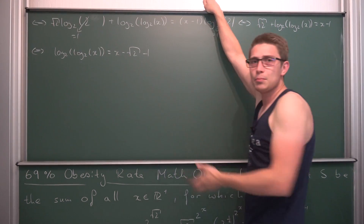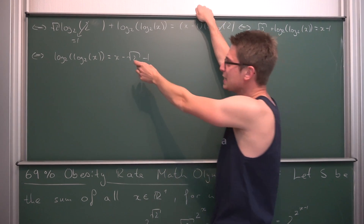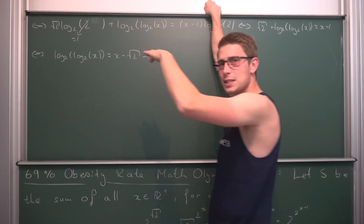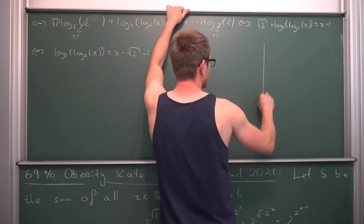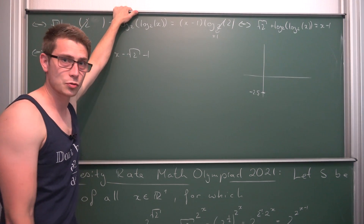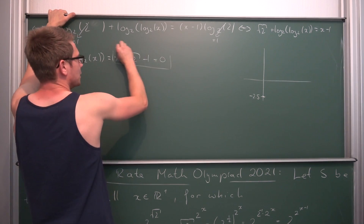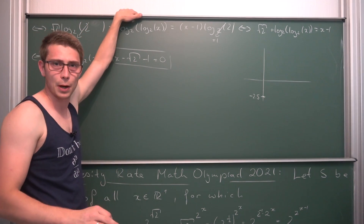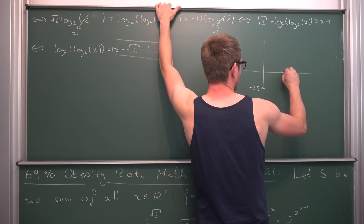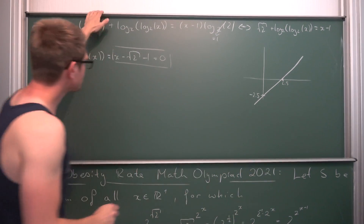On the right hand side we have a first degree polynomial — basically an identity function shifted down by approximately 1 plus square root of 2, which is about 2.5 units in the downward y direction. Its zero is at approximately x equals 2.5, and the function passes through approximately negative 2.5 on the y-axis. So here is our first function, a linear function.